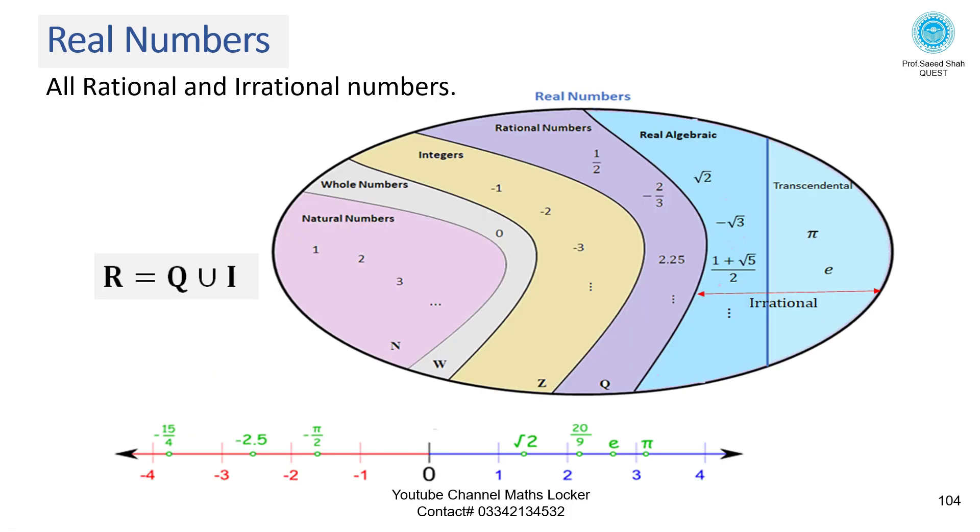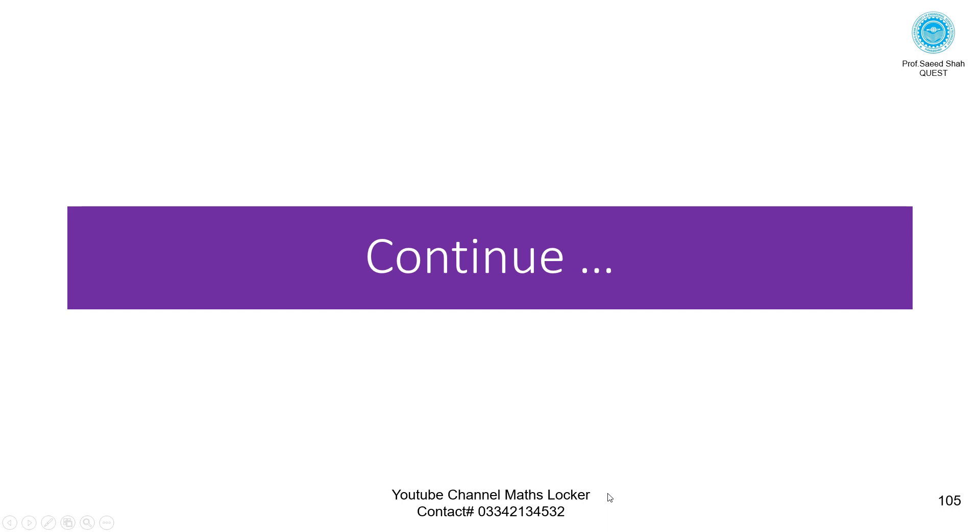Real numbers: all rational and irrational numbers. You can see that the collection of rational and irrational numbers together forms the set of real numbers. For example, on the number line. Continue in next video.